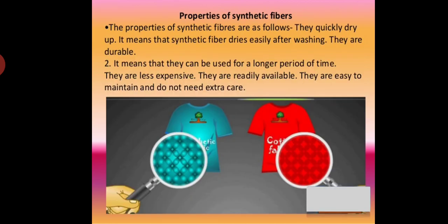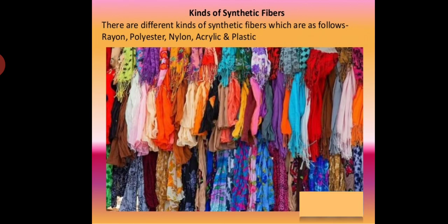Properties of synthetic fibers: they dry up quickly because they absorb very little water — if synthetic fiber clothes are washed and dried, they dry very quickly. They are very durable and can be used for a longer period of time. They are less expensive, readily available, easy to maintain, and do not need extra care.